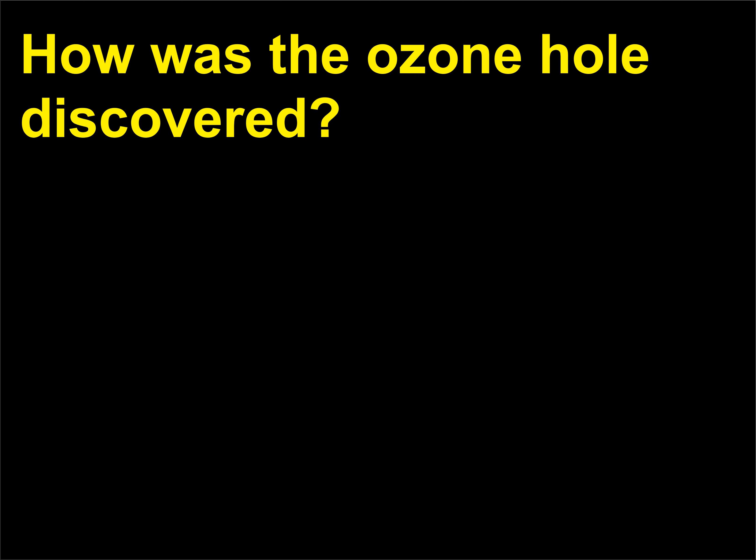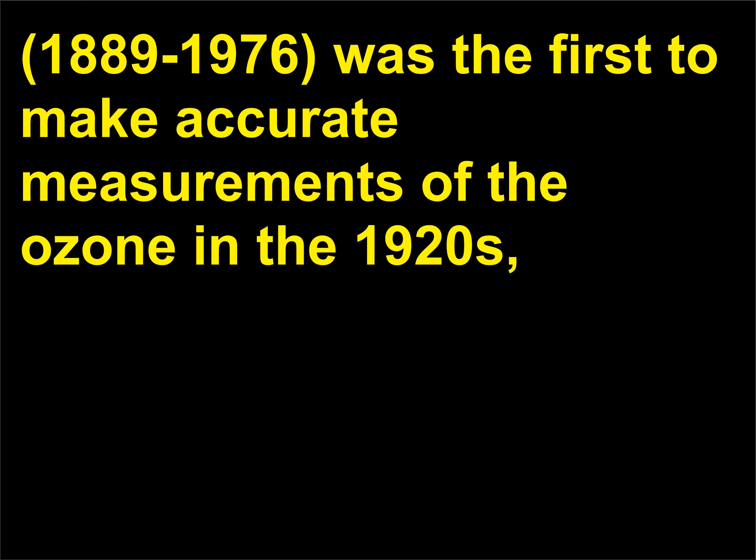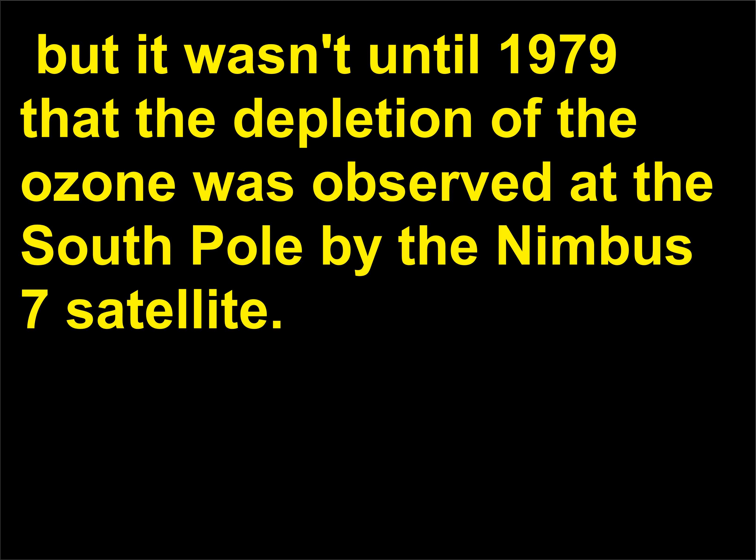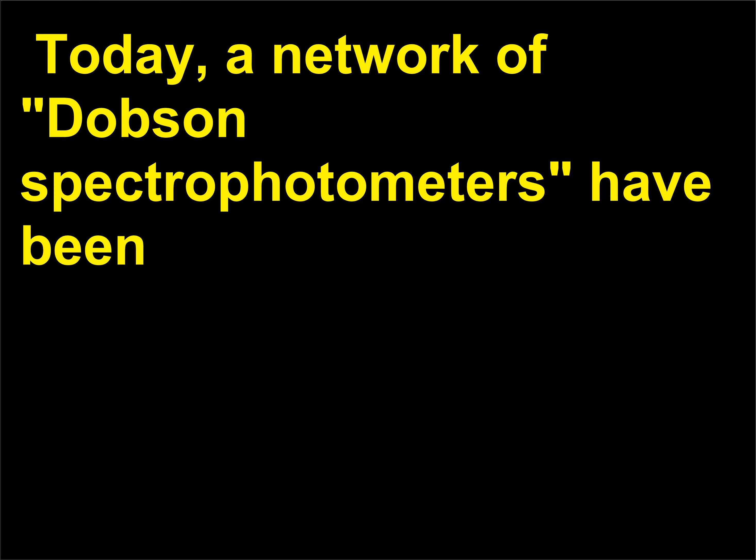How was the ozone hole discovered? The famous meteorologist Gordon Miller Bourne Dobson (1889–1976) was the first to make accurate measurements of the ozone in the 1920s. But it wasn't until 1979 that the depletion of the ozone was observed at the South Pole by the Nimbus-7 satellite. Today, a network of Dobson spectrophotometers have been set up around the world to monitor changes in the ozone.